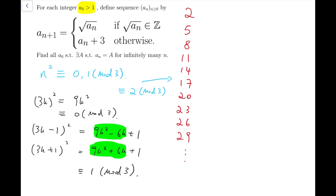So whenever I start a sequence with a number congruent to 2 mod 3, I will never get the property I want, which is that there exists some number that appears infinitely many times inside the sequence — because each number only appears once in these sequences, since it just goes on forever.